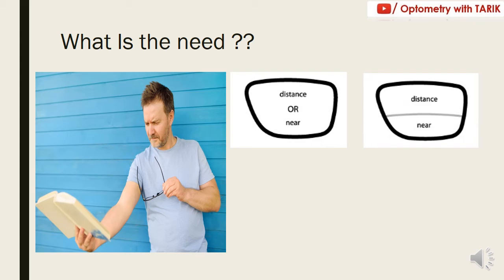The second option is a bifocal lens. A bifocal lens can give you distance and near vision both simultaneously. But the problem here is the visible line of the segment top, which is cosmetically not very appealing, as well as the prismatic jump present because of the segment. Also in bifocal lenses, the intermediate vision is not corrected — the patient does feel a problem at intermediate, which is seen neither with the distance nor with the near portion.